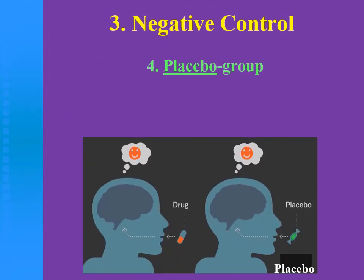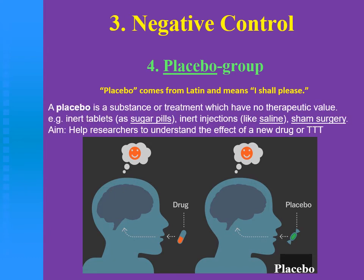The fourth and last group is the placebo group. Placebo means 'I shall please.' And the placebo is a substance or treatment which has no therapeutic value — like inert tablets, sugar tablets, or inert injections like saline.